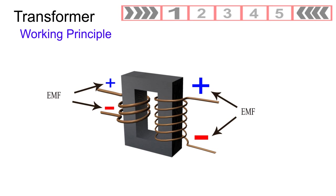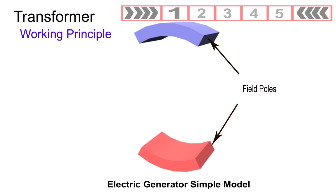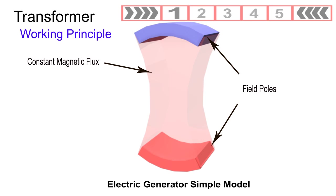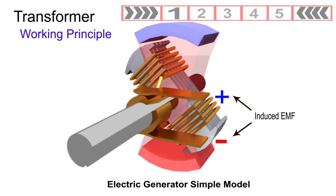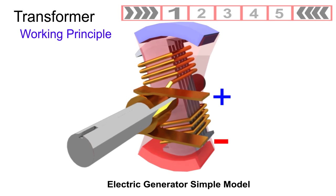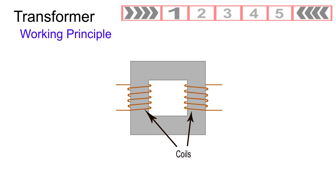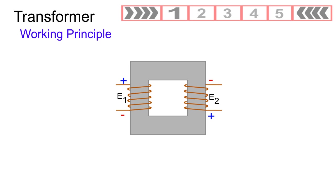Electromotive forces are induced by a change in flux linkage. In the generator, the flux is substantially constant in magnitude; the flux linking the armature coils changes due to relative mechanical motion of the flux and the coils. In the transformer, the coils and magnetic circuit are all stationary with respect to one another. The EMFs are induced via the change in magnitude of the flux with time, and an AC voltage is applied to the primary winding WP.